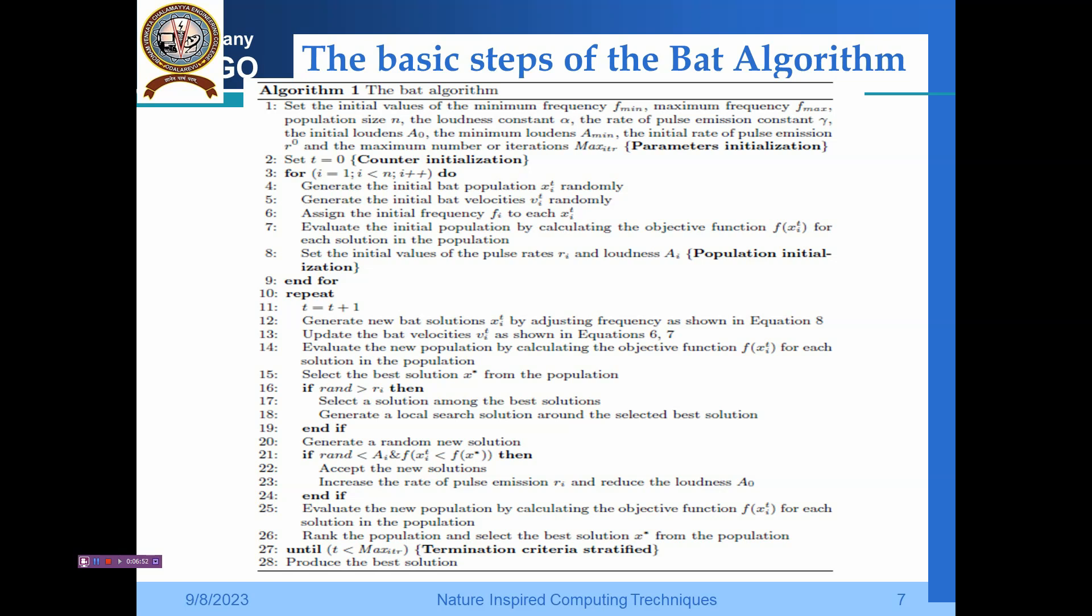If rand > r_i, then select a solution among the best solutions and generate a local search solution around the selected best solution. If rand < A_i and f(x_i) < f(x*), then accept the new solution, increase the rate of pulse emission r_i, and reduce the loudness A_i.